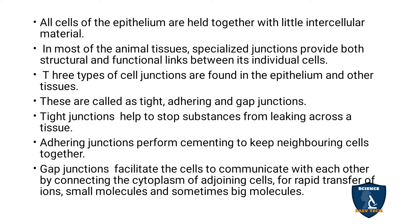Tight junctions seal cells so tightly that there is no leakage — just as you would seal a leaking pipe tightly to stop leakage. So tight junctions stop substances from leaking across the tissue. Adhering junctions perform cementing to keep neighboring cells together — like applying paste or glue between two cells.